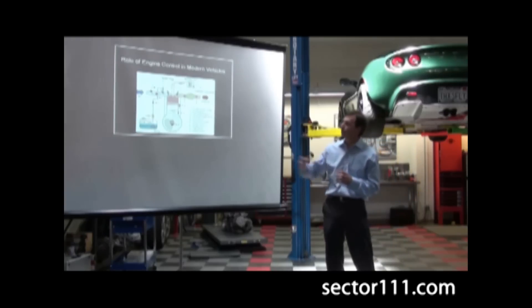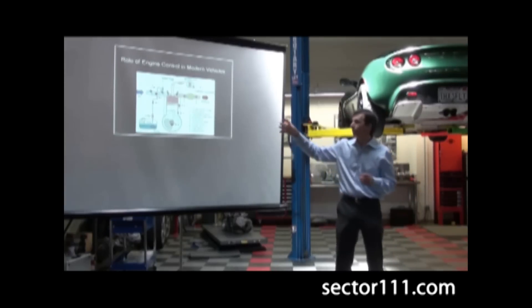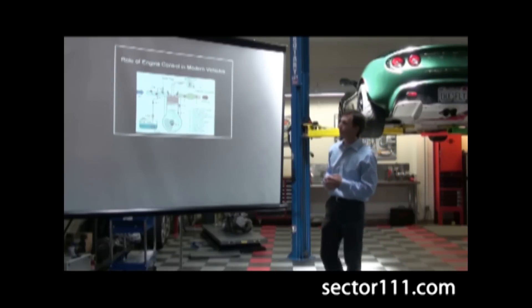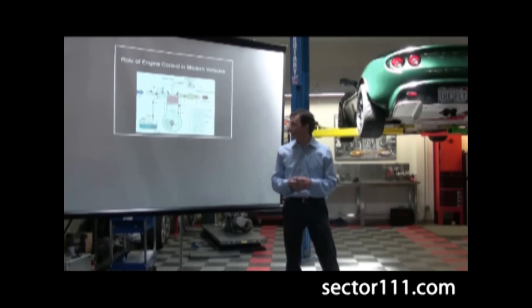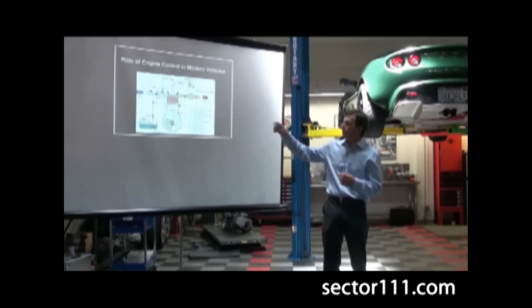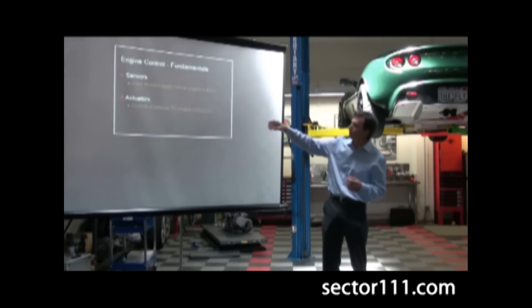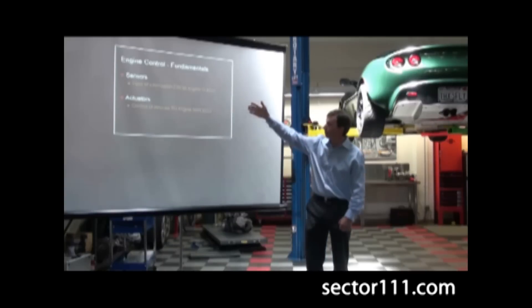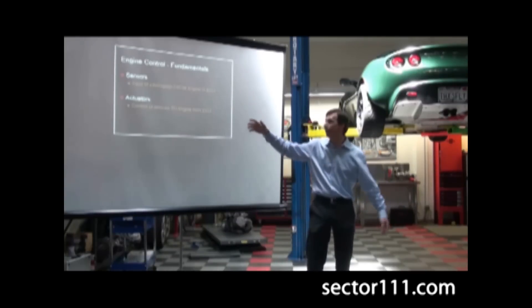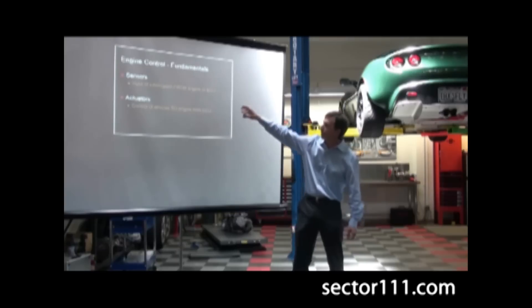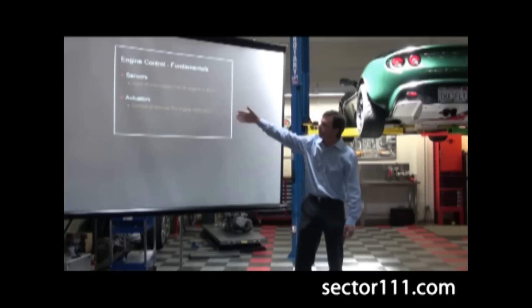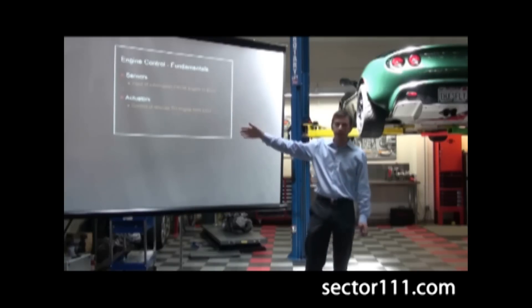So the next part is just a quick review. The role of engine control in modern vehicles is pretty complex. It uses a variety of sensors and actuators, which is the next slide. Sensors basically input information from the engine to the ECU, as you probably already know that. And then actuators, sensors are things like temperature sensors and motion detectors and things like that. Actuators control devices to the engine from the ECU.